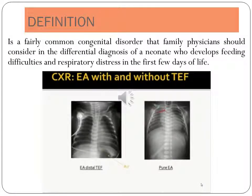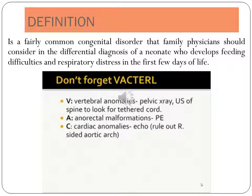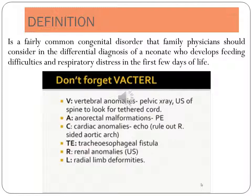This is tracheoesophageal fistula and esophageal atresia. It is the most common anatomy in children. One of the conditions involves the upper esophagus which ends in a blind pouch, and the TEF is connected to the distal esophagus. You also want to keep in mind the association with vertebral anomalies, renal anomalies, radial limb deformities, and cardiac anomalies — and you want to get imaging studies to rule any of these other conditions out.